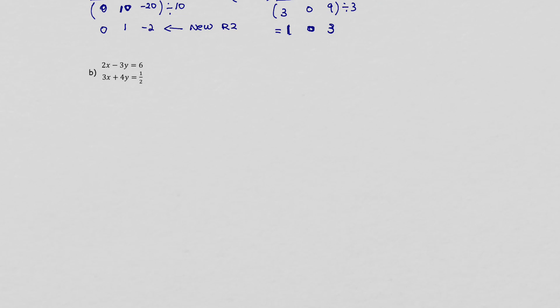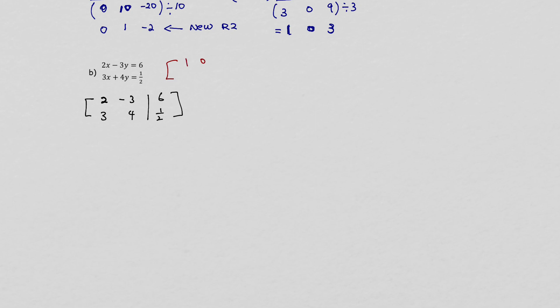Let's look at one more example. First, we write it in matrix format — just copy the numbers for x, y, and the solutions, making sure the order is the same. Start with x, then y, then solutions. Remember, we're still trying to achieve the form 1, 0 / 0, 1 with solutions.